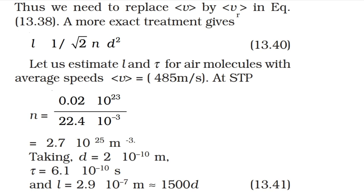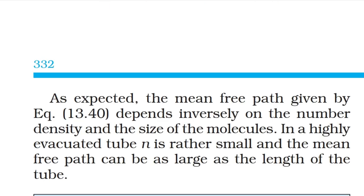Let us estimate L and τ for air molecules. After calculating: τ = 6.1 × 10⁻¹⁰ seconds and L = 1500d. As expected, the mean free path depends inversely on the number density and the size of the molecules. In a highly evacuated tube, n is rather small and the mean free path can be as large as the length of the tube.